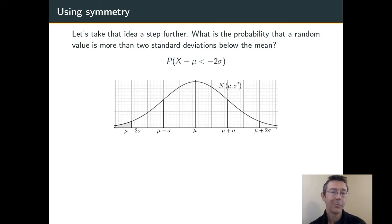Let's do one harder example. What's the probability that a randomly selected value is more than two standard deviations below the mean in a normal distribution? In other words, what's the area of that shaded region there on the left? The probability that X - μ is less than -2σ.